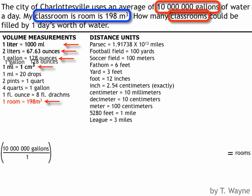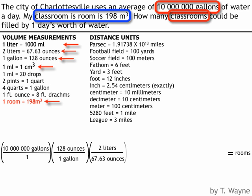I'll start with 128 ounces per gallon as my conversion factor. I started with gallons on top, so now I'm going to have gallons on the bottom. I've got ounces on top, so I'll put ounces on the bottom. That leaves me with two liters on top. Liters on top, liters on bottom, leaving me with milliliters on top. Then I'll use my next conversion factor — milliliters on the bottom — which leaves me centimeters cubed on top.